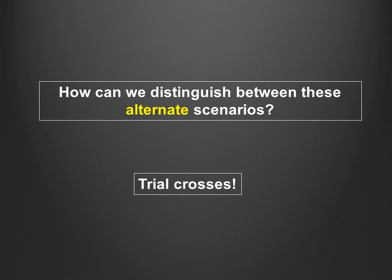The goals of this video are: one, to help you understand and interpret the results of trial crosses; two, to demonstrate that some trial crosses produce ambiguous results while others produce informative results, and to help you distinguish between these two types of crosses; and three, to help you learn to recognize these types of crosses as you perform the lab exercise.